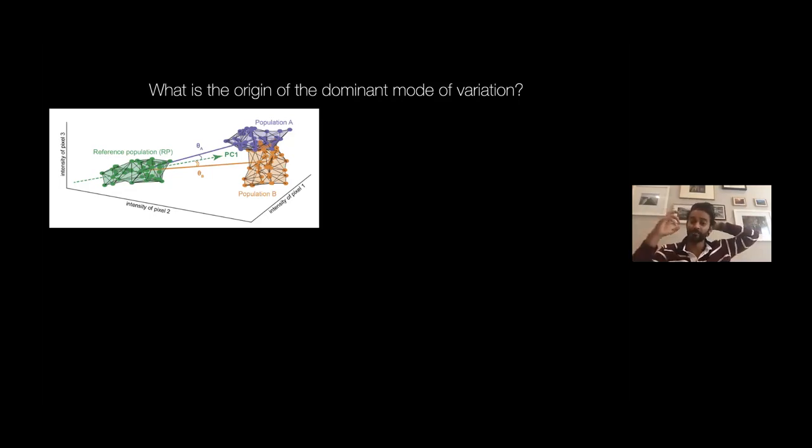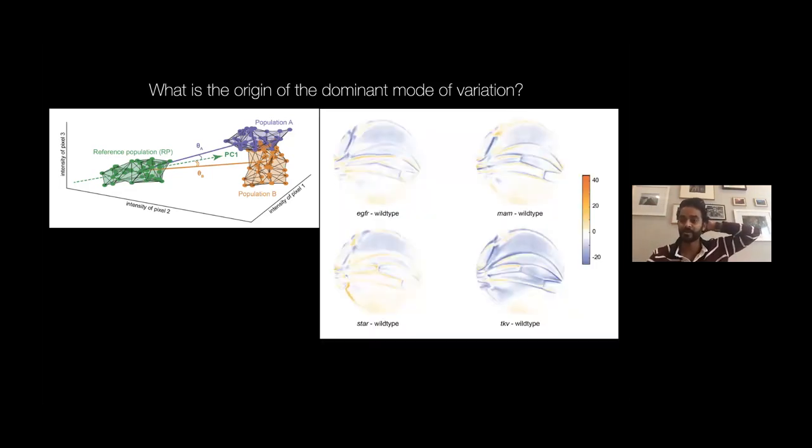So when you see a cloud of points, that is being generated by genomic variation and environmental variation because those larvae do different little things and there's behavior involved. I want to do this comparison: are mutant phenotypes related to the directions of variation in the reference population? Here are the four mutants I looked at: EGFR, thick veins, mastermind—these are in some of the famous signaling pathways that are known contributors to vein patterning and wing formation.